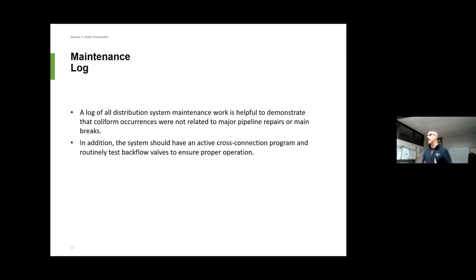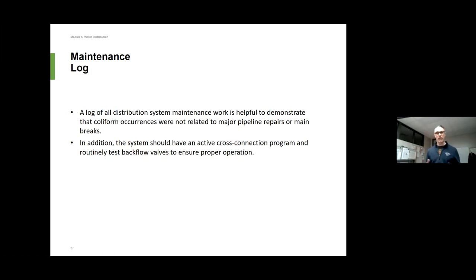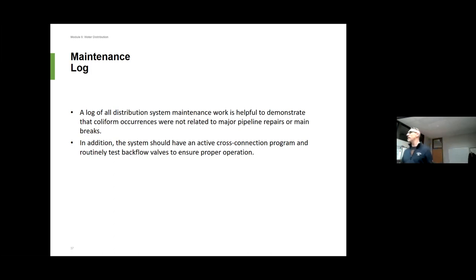All systems should also have an active cross-connection control program. This ensures water goes one way — when I give water to your customer, I don't want it back. Once it goes past my valves into your house, it is yours. I don't want it coming back into the main, because I don't know what you did with it. We want to make sure we're being safe.